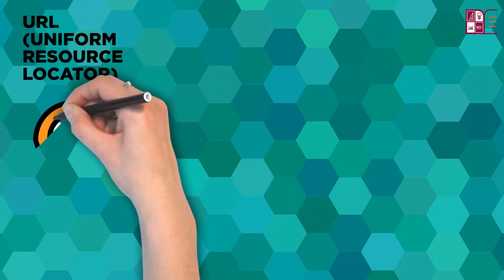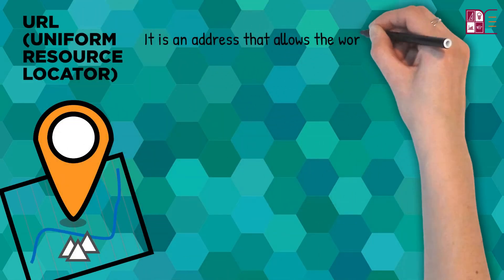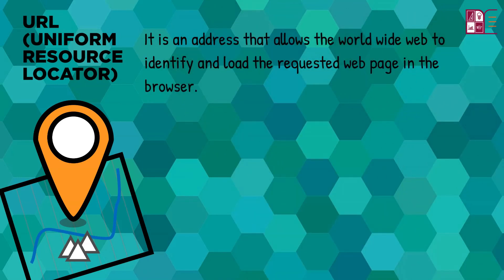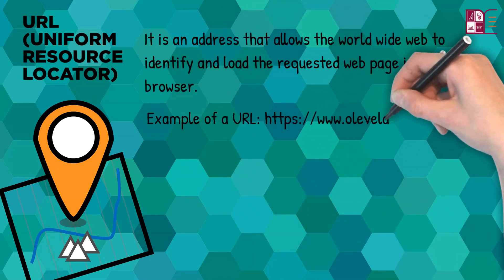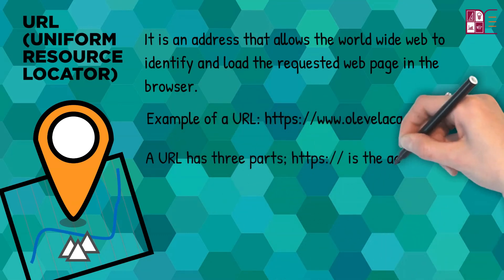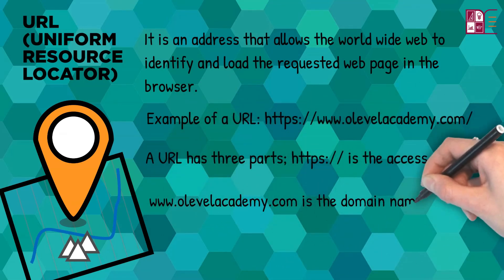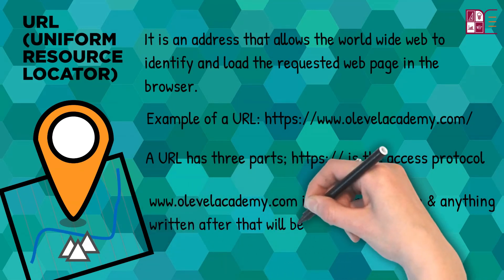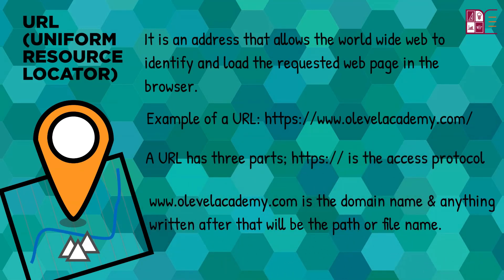URL: It stands for Uniform Resource Locator. It is an address that allows the World Wide Web to identify and load the requested web page in the browser. A URL has three parts: HTTPS:// is the access protocol; www.olevenacademy.com is the domain name; and anything written after that is the path or filename. If nothing is written, it will take you to the home page of the website.